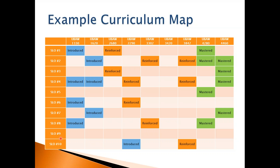Those are conversations that a program has to have, and this is where a curriculum map can be useful: what is appropriate, what is not? Do we need to do a better job of reinforcing some of these learning outcomes? Are we introducing them within the curriculum? Are we finding ways to allow students to demonstrate mastery at the end? Those are conversations the faculty need to have.